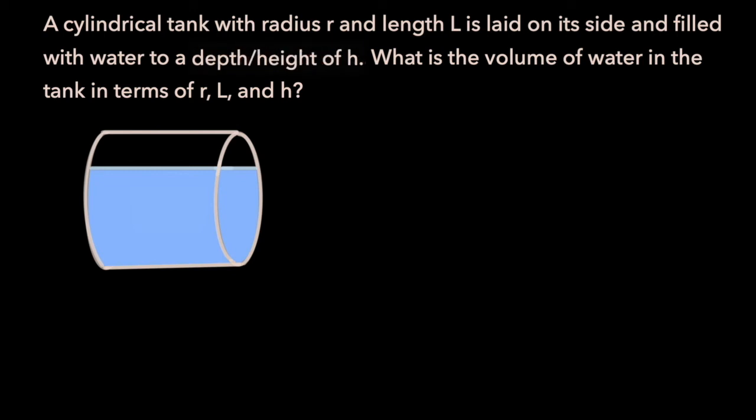A cylindrical tank with radius r and length l is laid on its side and filled with water to a depth or height of h. What is the volume of water in the tank in terms of r, l, and h?